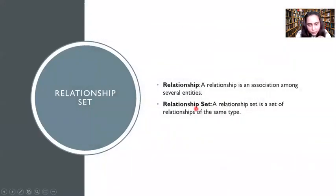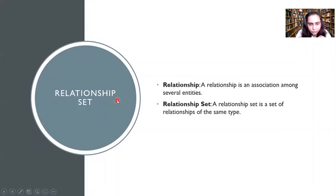The next thing in an ER model is the relationship set. A relationship is an association among several entities, and a relationship set is a set of relationships of the same type. For example, if you have a student entity and a professor entity, the relationship between them would be teaching. In the relational model, a relationship set would also be a table, but it would contain only the primary keys used as foreign keys to represent the connection between two different entity sets.